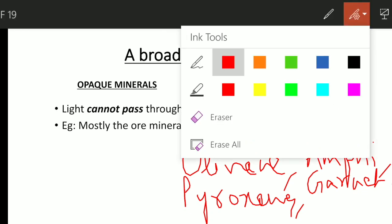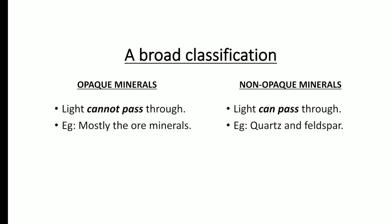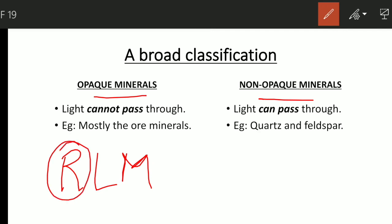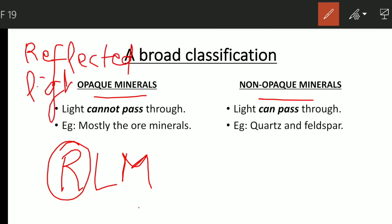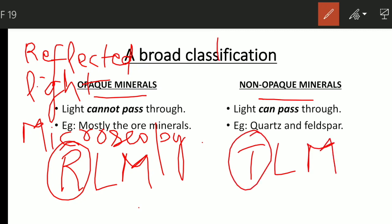How do we observe these minerals? Opaque minerals are not allowing the light to pass through, while non-opaque minerals allow the light. So there has to be some difference in how we observe them under the microscope. Opaque minerals are studied under RLM — Reflected Light Microscopy. And the non-opaque minerals are studied under TLM — Transmitted Light Microscopy.